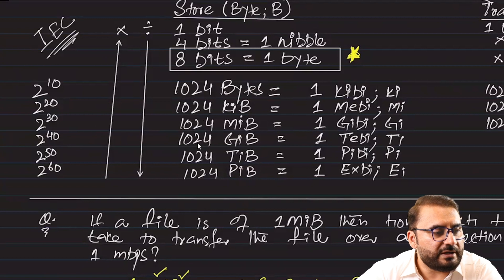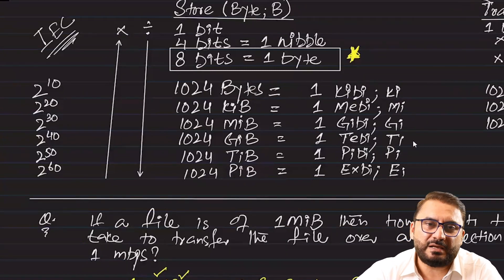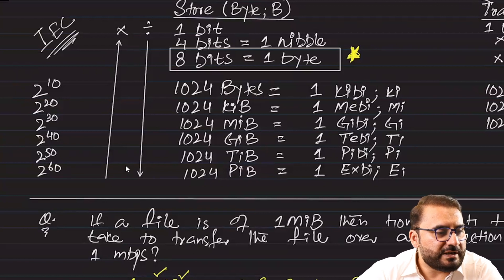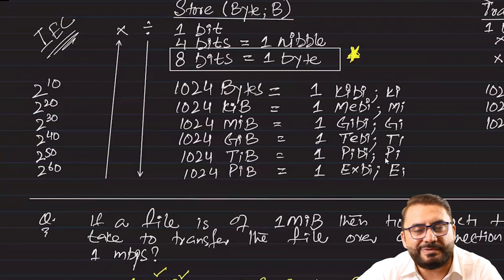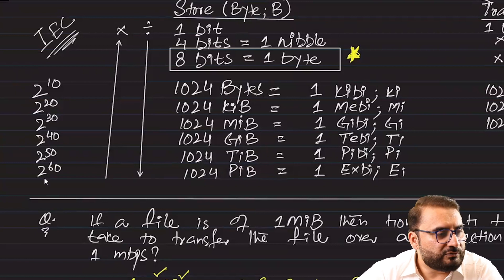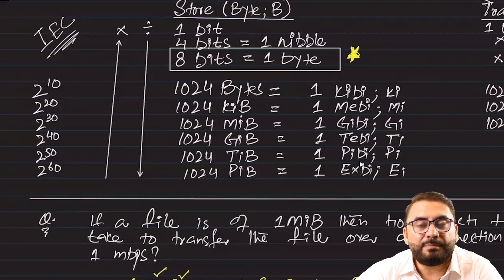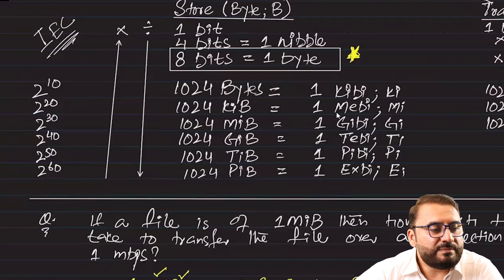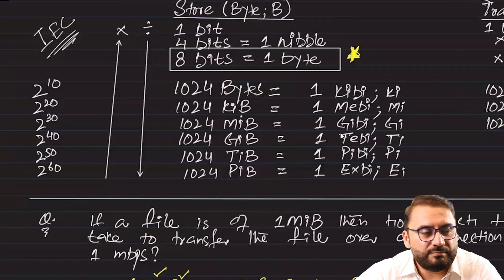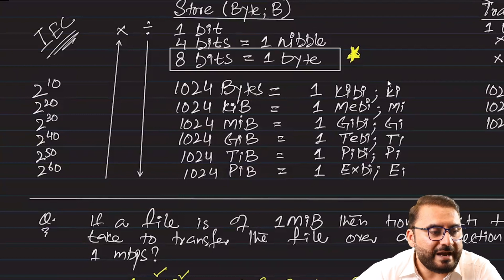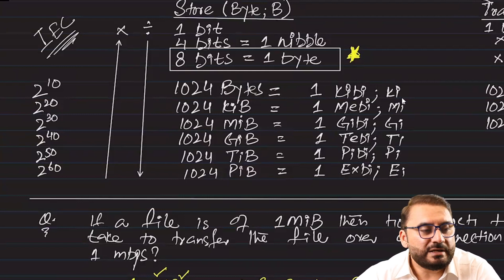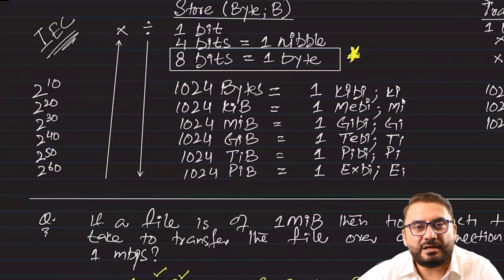Similarly, 2 to the power 40 — that is 1024 gibibytes — is equal to one tebibyte, unit Ti. 2 to the power 50 — 1024 tebibytes — is one pebibyte, unit Pi. Then 2 to the power 60 — 1024 pebibytes — is one exbibyte, unit Ei. Pay attention to the spelling: kibi, mebi, gibi, tebi, pebi, exbi, with prefix units Ki, Mi, Gi, Ti, Pi, Ei.